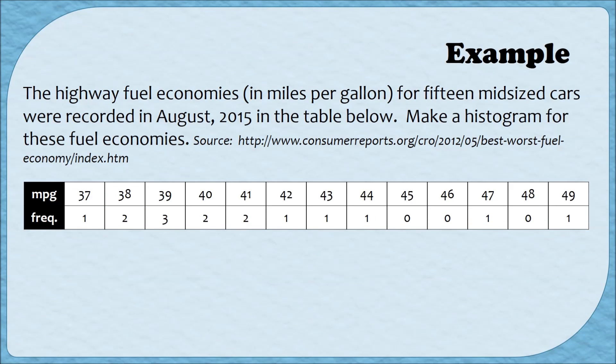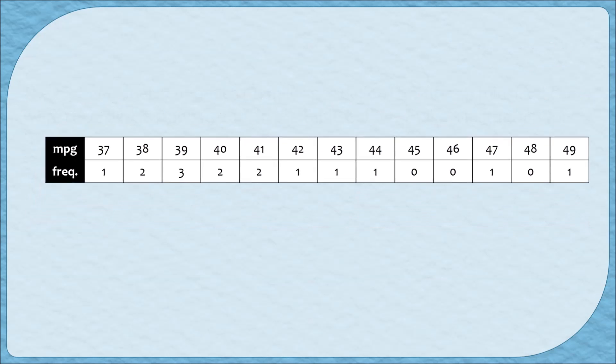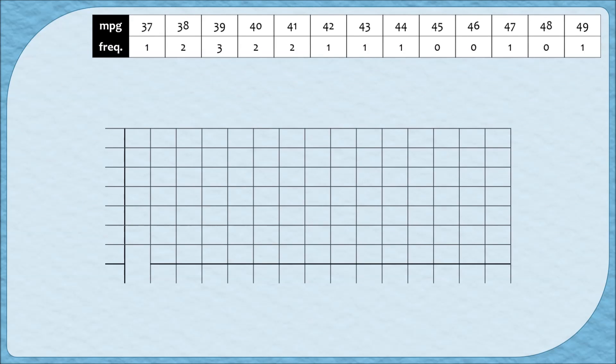In this example, the highway fuel economies for 15 mid-sized cars were recorded in August of 2015. We're going to make a histogram for these fuel economies. To give ourselves some space to graph, I'm going to shove this frequency distribution to the top of the screen. Let's go through each of the six steps for creating our histogram. The first step is to create a frequency distribution, which fortunately has already been done for us. If we were given the raw data first, then we would need to go through and make the frequency distribution before we can make our graph.